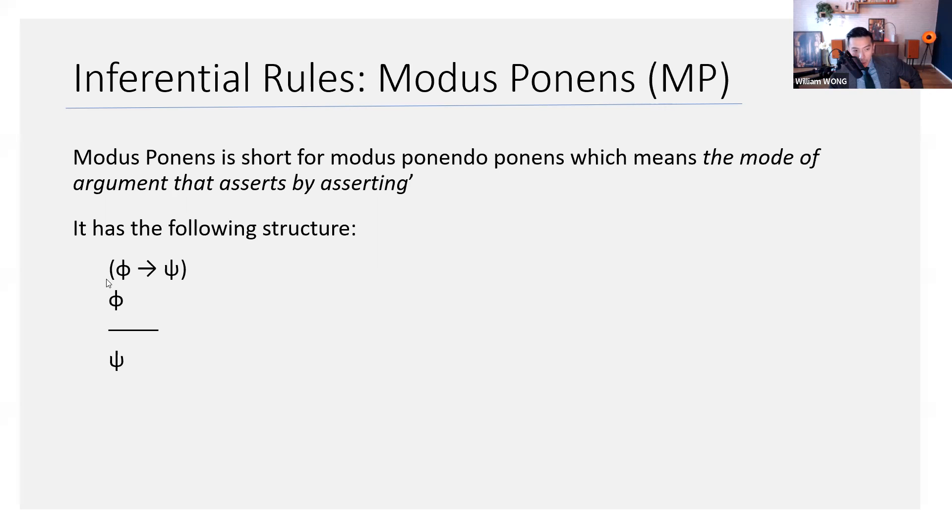Well, here we have, say, premise one. We have phi entails a phi conditional psi. Premise two, we have phi, and then we conclude, therefore, psi. I mean, this makes sense. We do this stuff all the time.